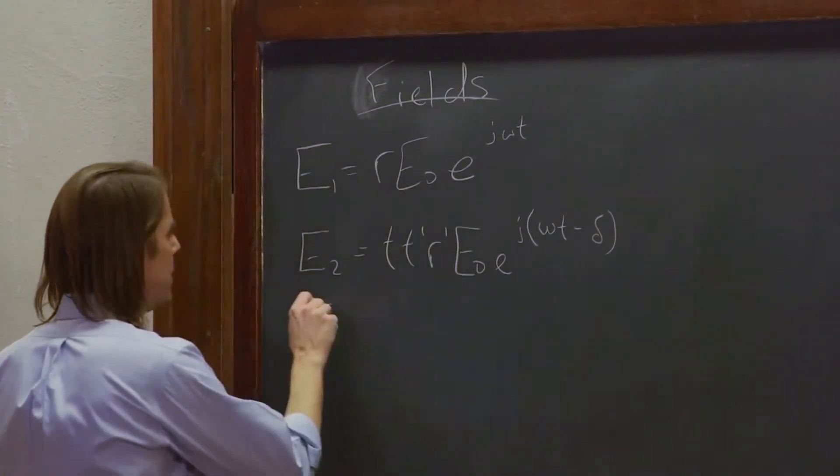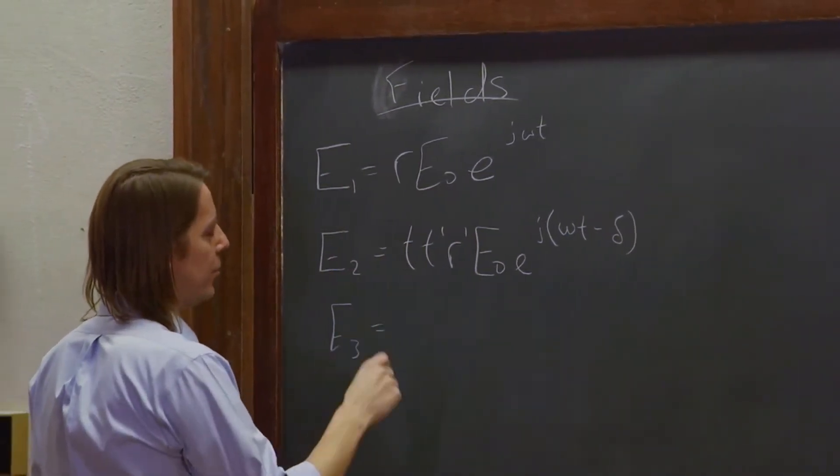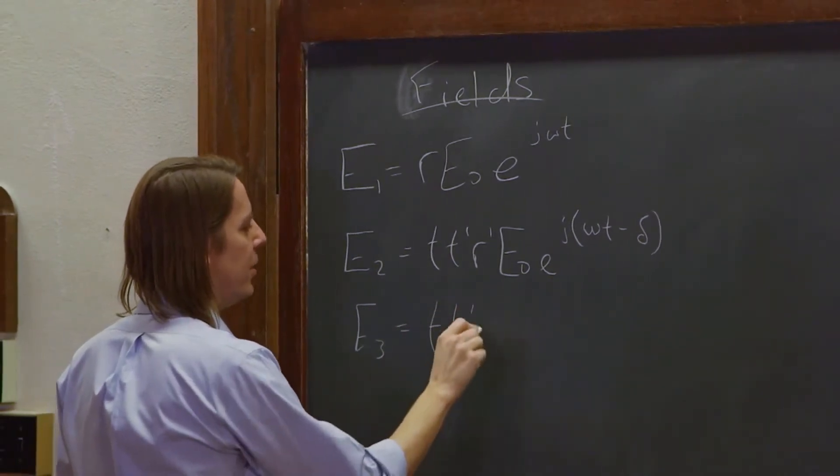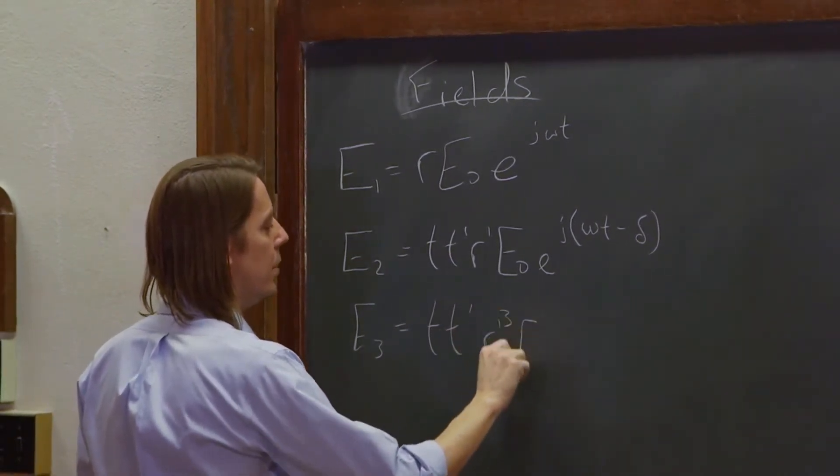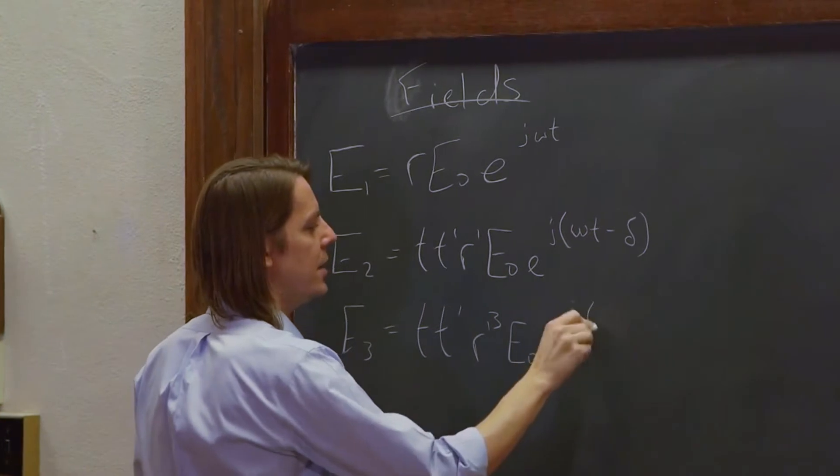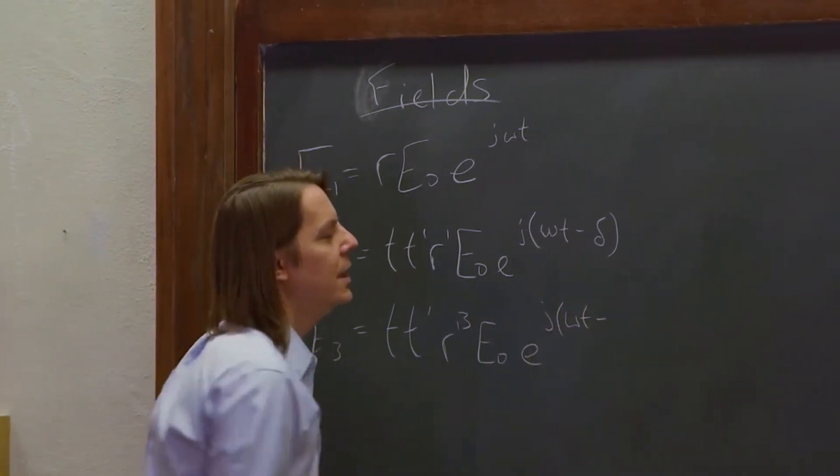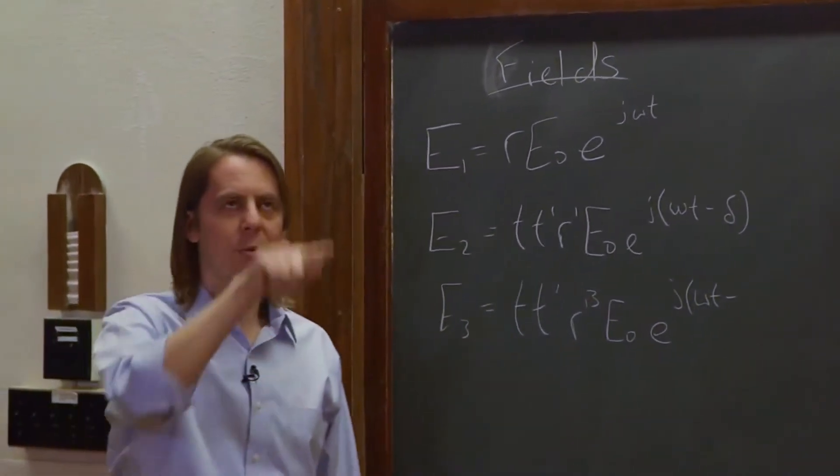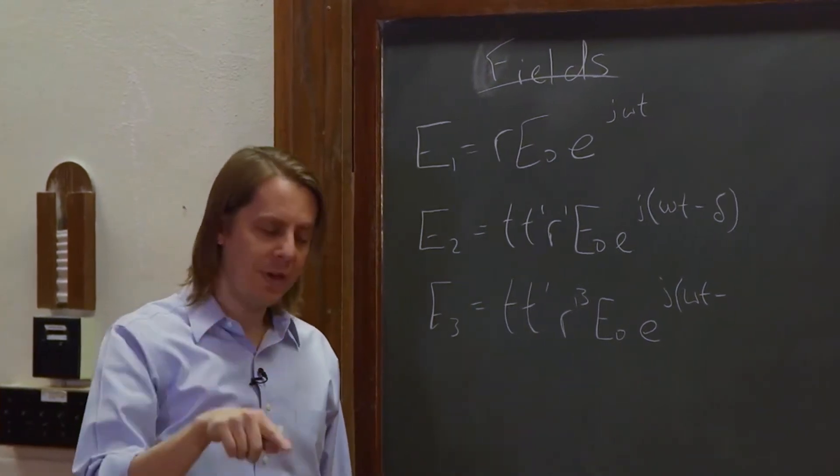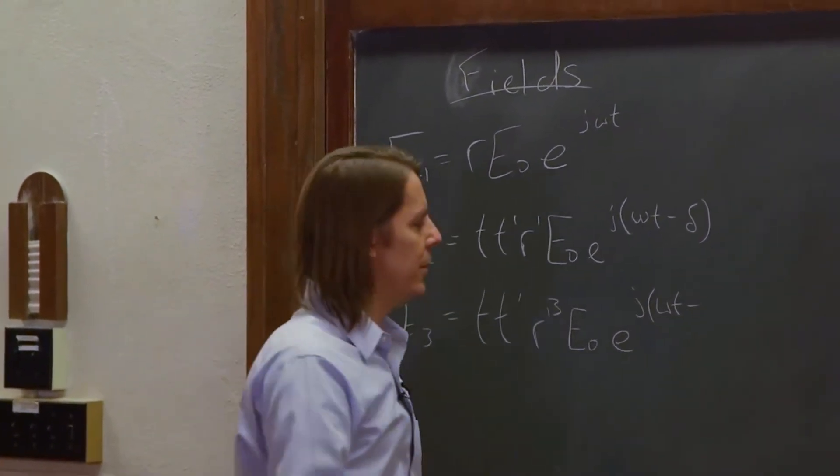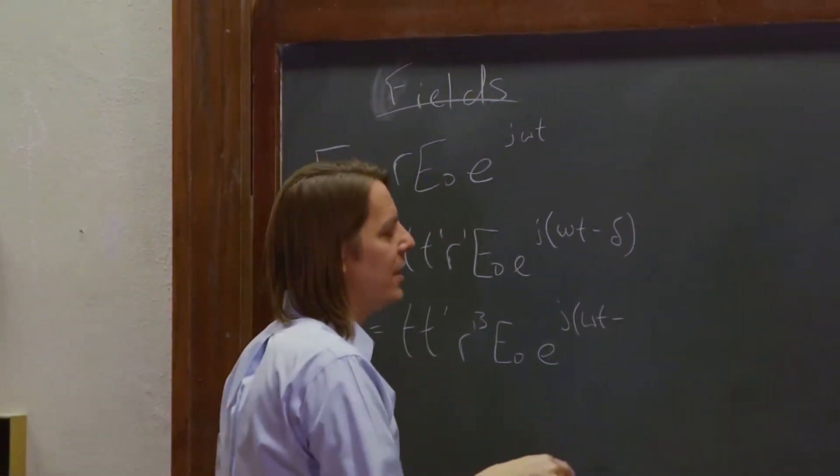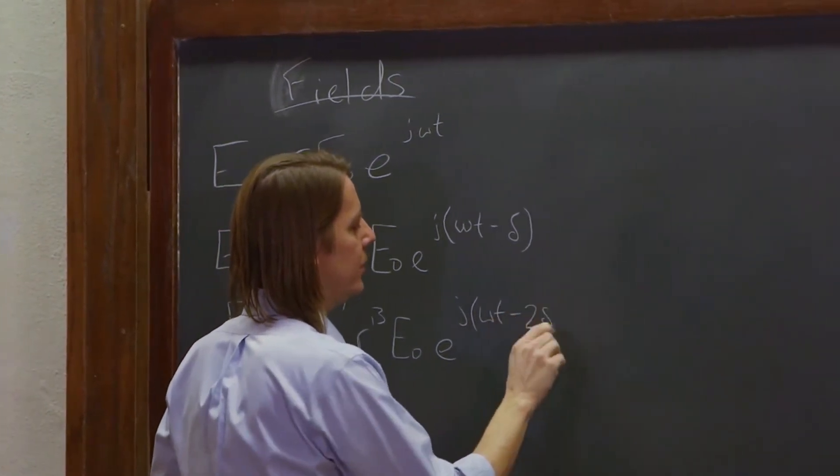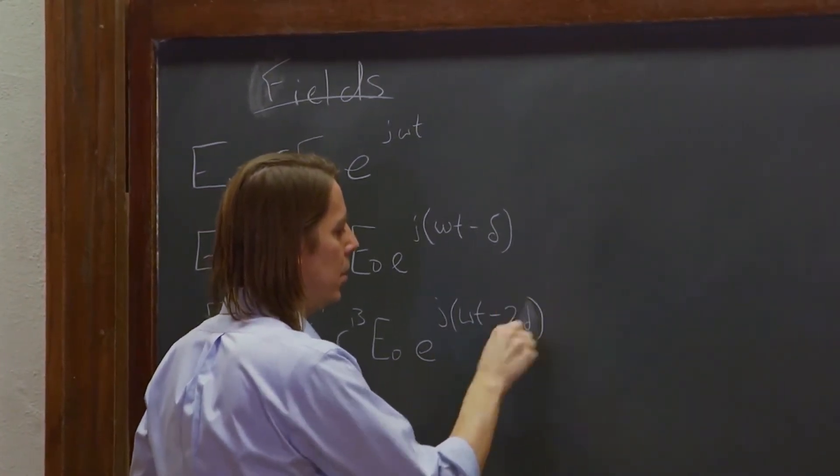Let's do E3, and this is what we did before. It's got to go in, it's got to come out. R prime to the third, E0 E to the J omega T, and now this one will do that same delta but twice. The phase lag that builds up due to the difference in the path is minus two delta.